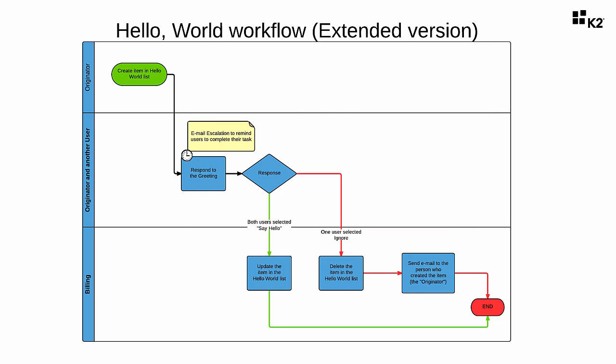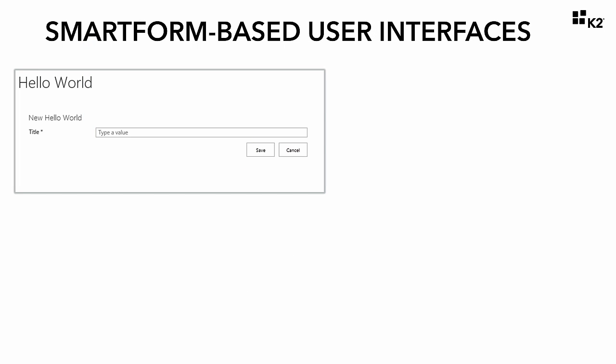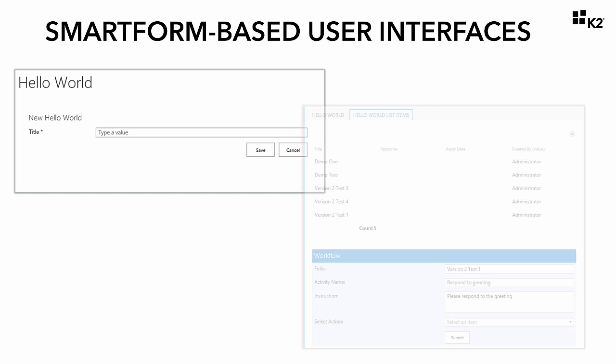For the data, we won't be making any changes to the Hello World SharePoint list, which happens to be the data source behind the smart object for this application. And for form-related updates, we will be replacing the default SharePoint forms with generated K2 Smart Forms, which will give us the ability to customize the layout and behavior of the user interfaces for this application by removing some unnecessary fields and editing some of the rules.